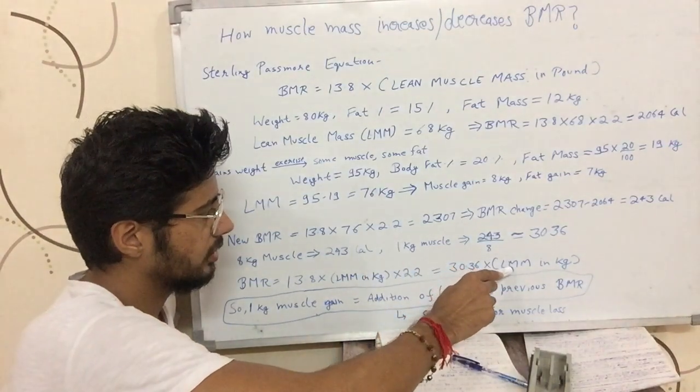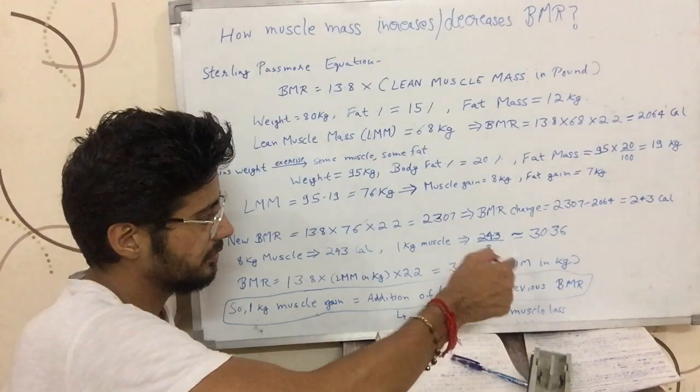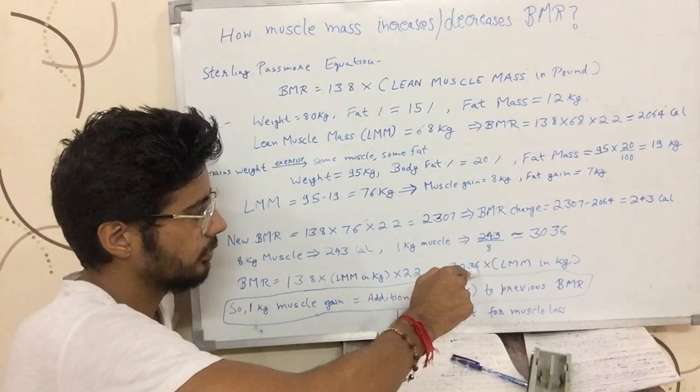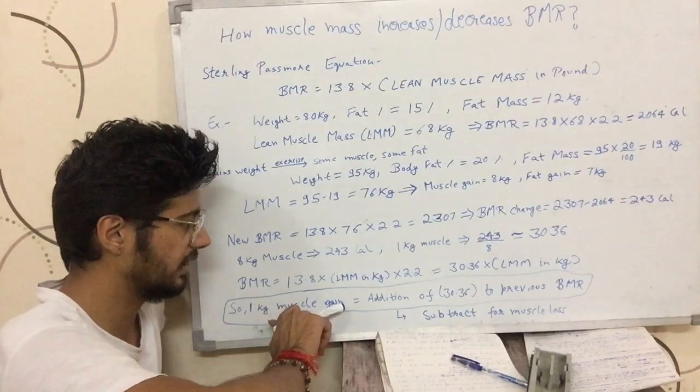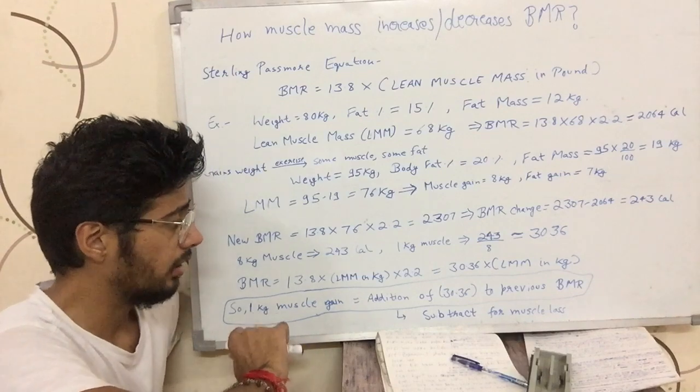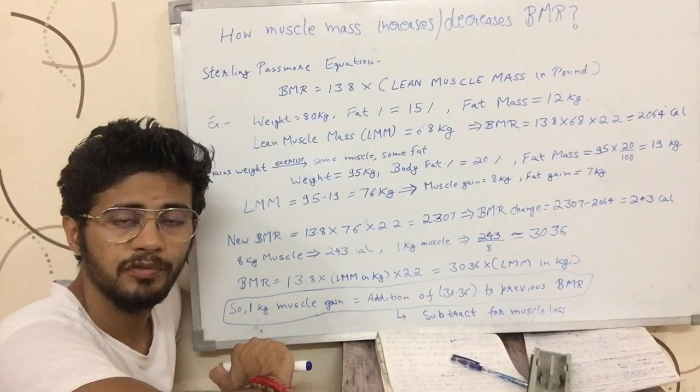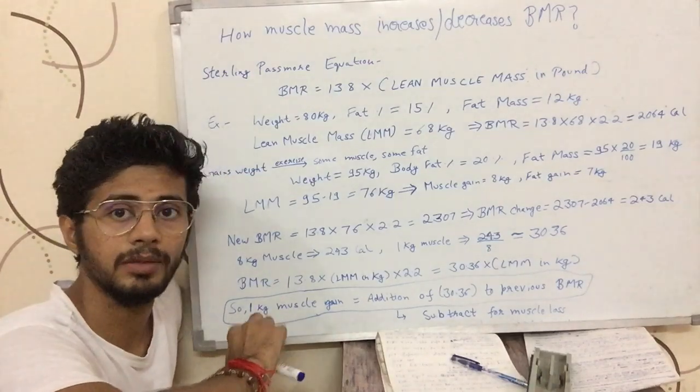Let's say someone had 50 kilograms of lean muscle mass. When it becomes 51, you add 30.36 to the BMR. Basically, when you gain 1 kilogram of muscle, you add 30.36 to your BMR. If you lose 1 kilogram of muscle, you subtract 30.36 from your BMR.